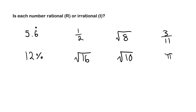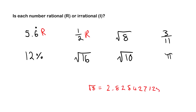Now we determine whether each number is rational or irrational. Remember: rational values include fractions, percentages, terminating decimals, and recurring decimals. Irrational values are things such as pi, usually represented by symbols, or surds. We'll put R next to rationals and I next to irrationals. So 5.6 repeating is a recurring decimal — it is rational. One over two is a fraction — also rational. If you put root 8 into your calculator, you get 2.828427125..., so it is a surd, and surds are irrational.